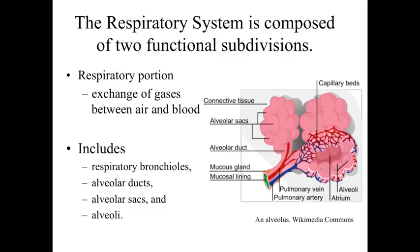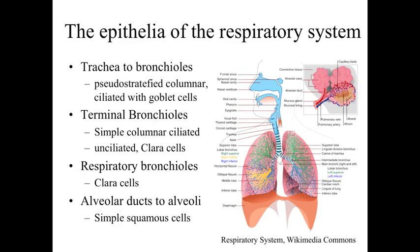The respiratory portion of the respiratory system includes the respiratory bronchioles, alveolar ducts, alveolar sacs, and alveoli. These are very thin-walled structures within the lungs that are vulnerable to potential pathogens and harm, so they need to be protected — and that protection is what occurs within the conducting portion. Now, starting with some generalizations, let's look at the epithelia of the respiratory tract.